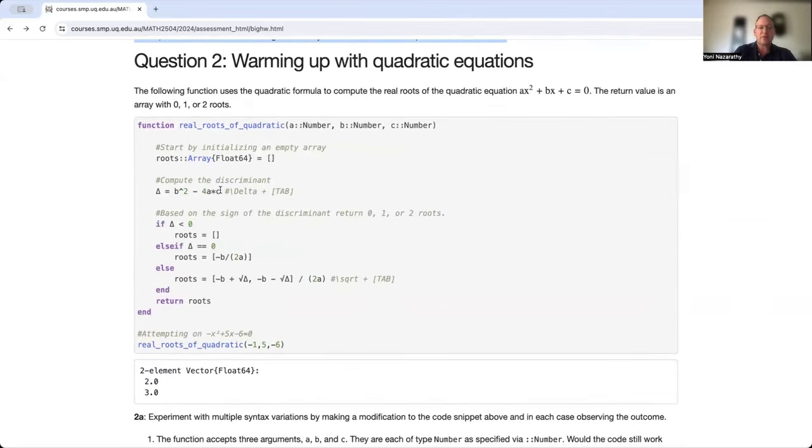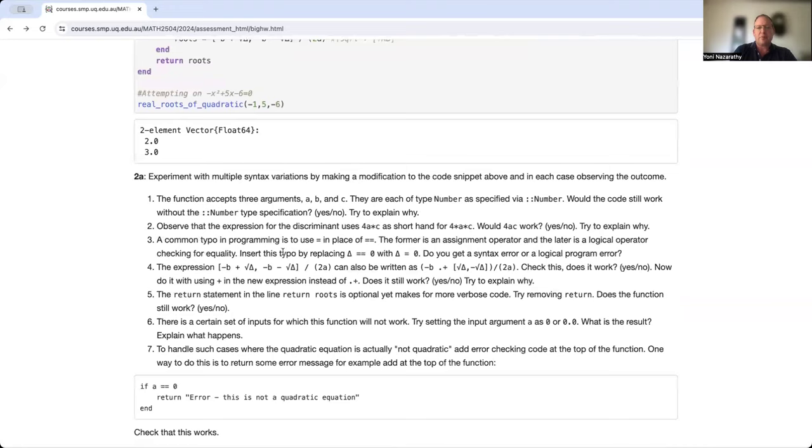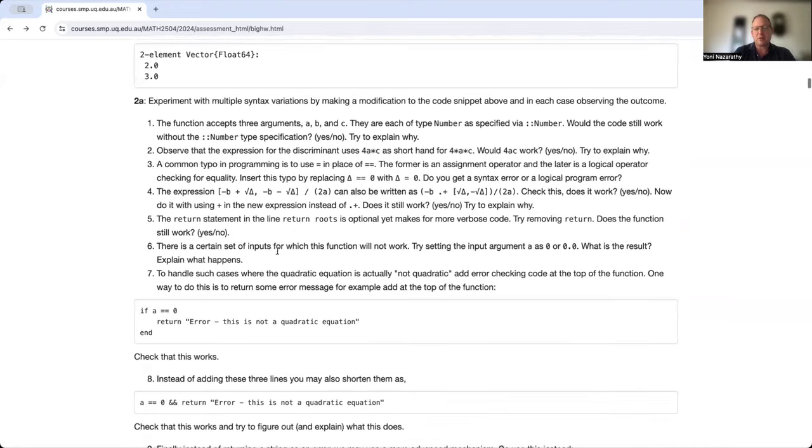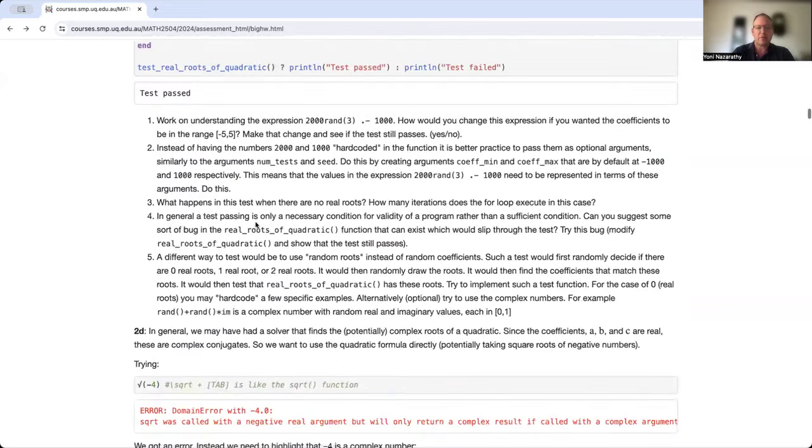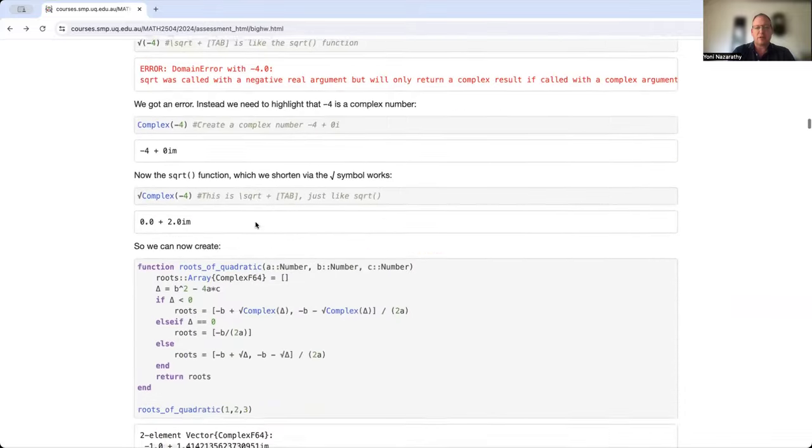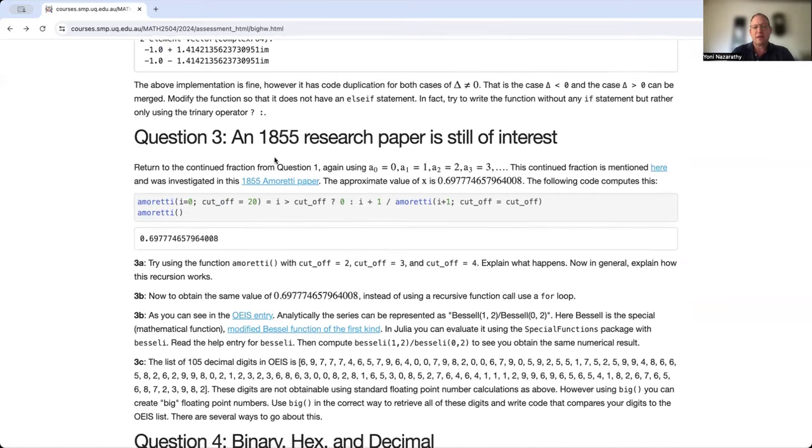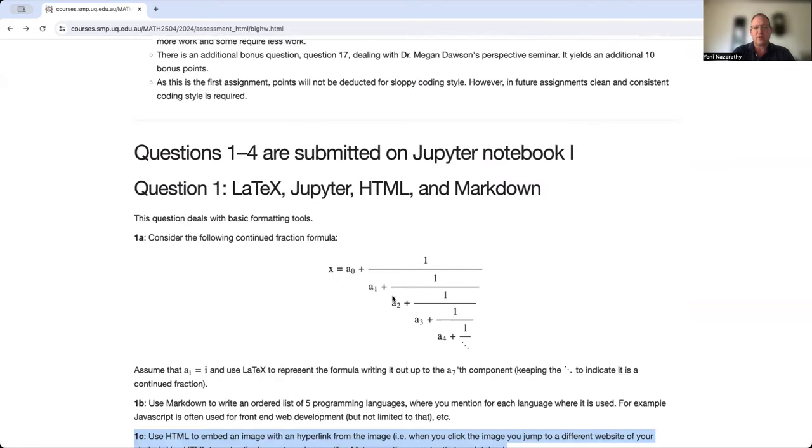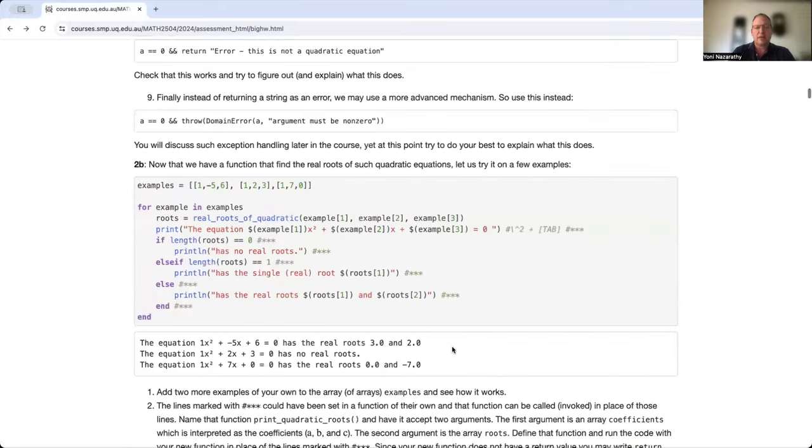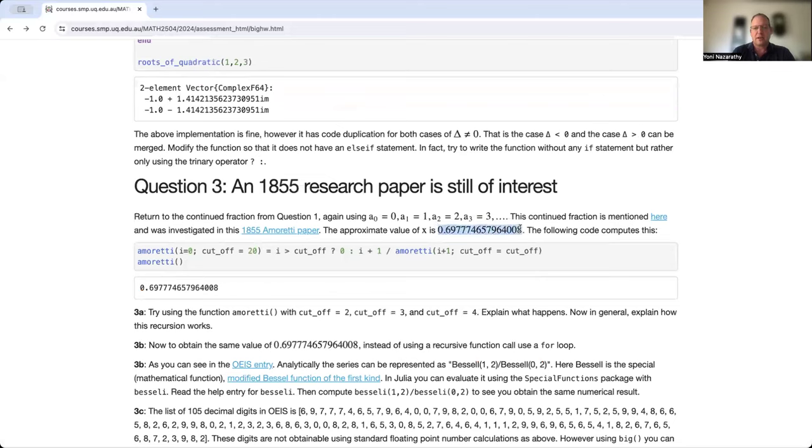Question two is really instructive. So even though it's long, it's supposed to be, it's really kind of an introductory question. It's recommended that both people from the pair really take their time to go over this and understand because you go and you step-by-step learn a few things associated with Julia in the very simple context of a quadratic equation. Question three is kind of neat. So it's related to this thing again, only one a zero zero, a one is one, a two is two, etc.